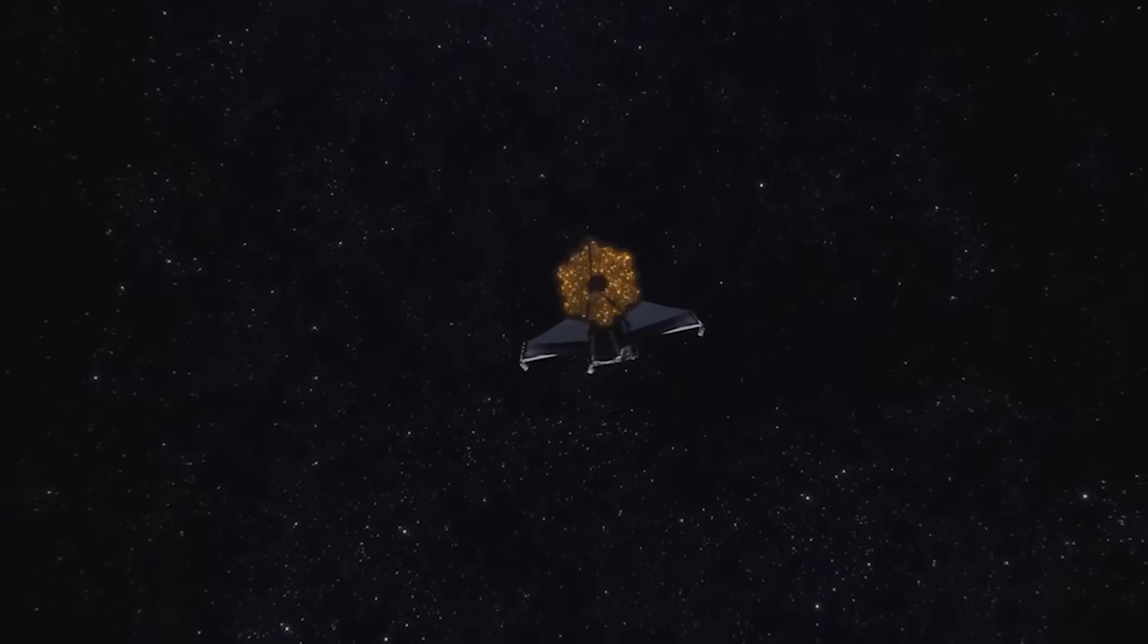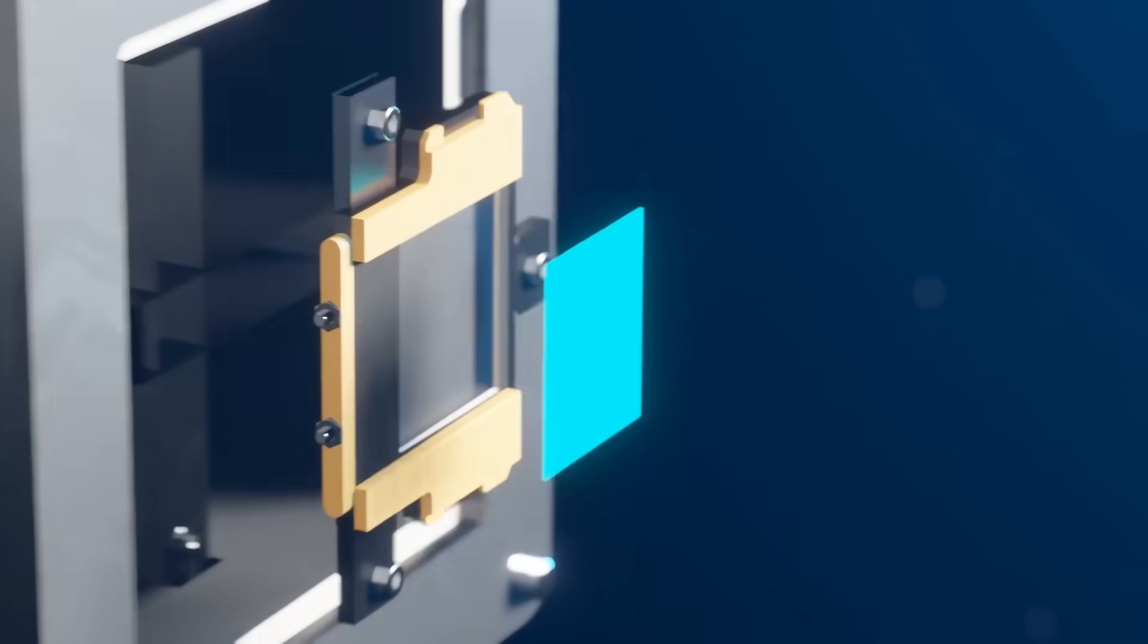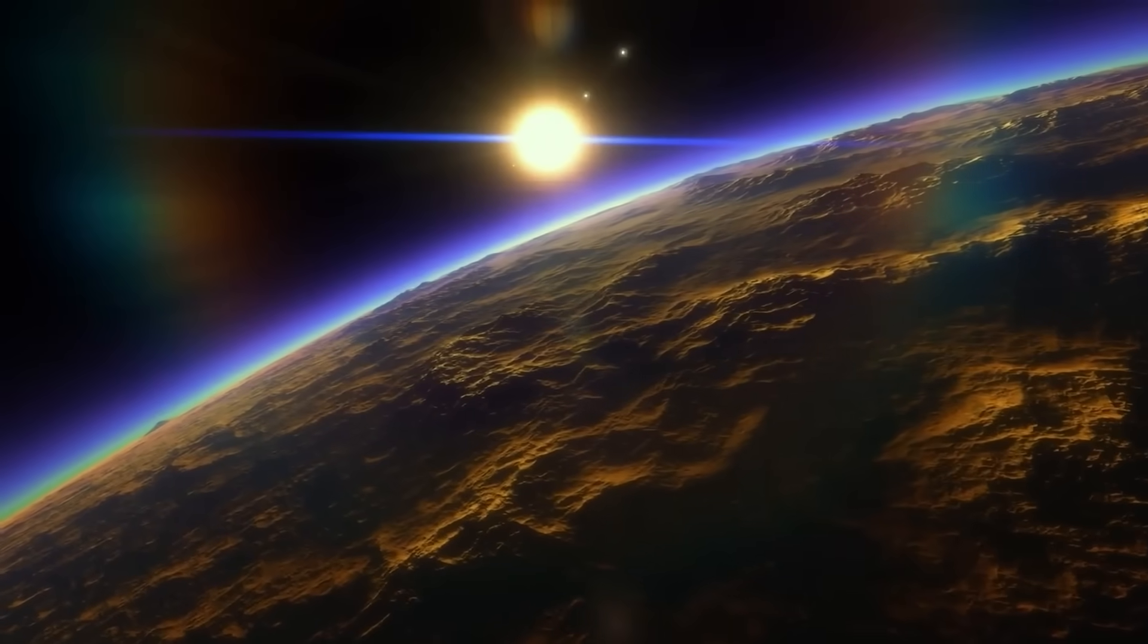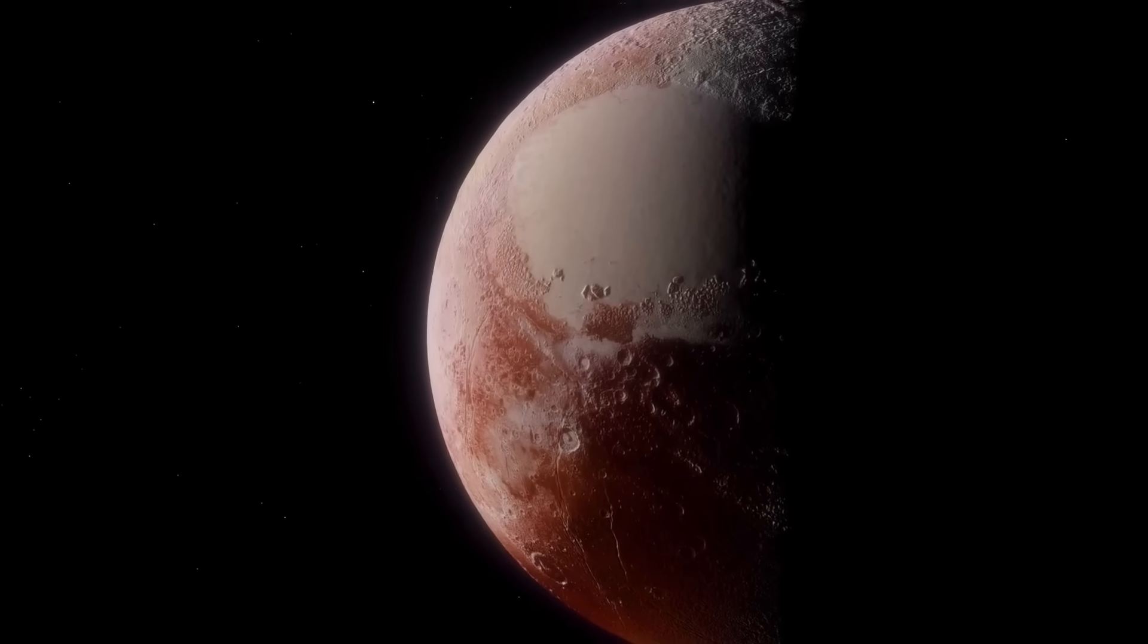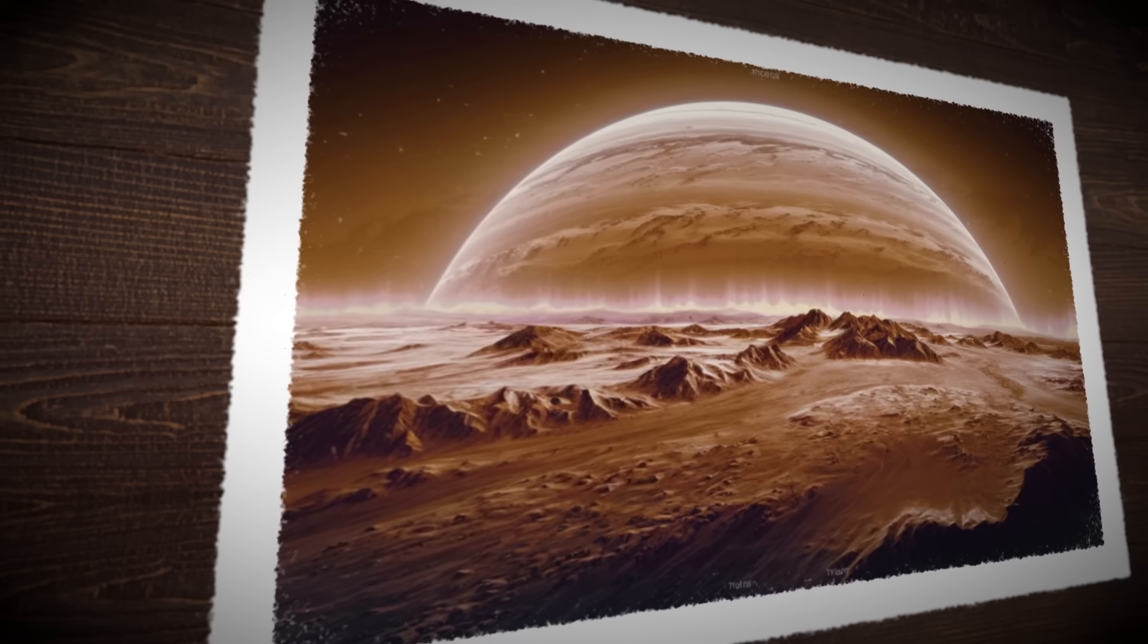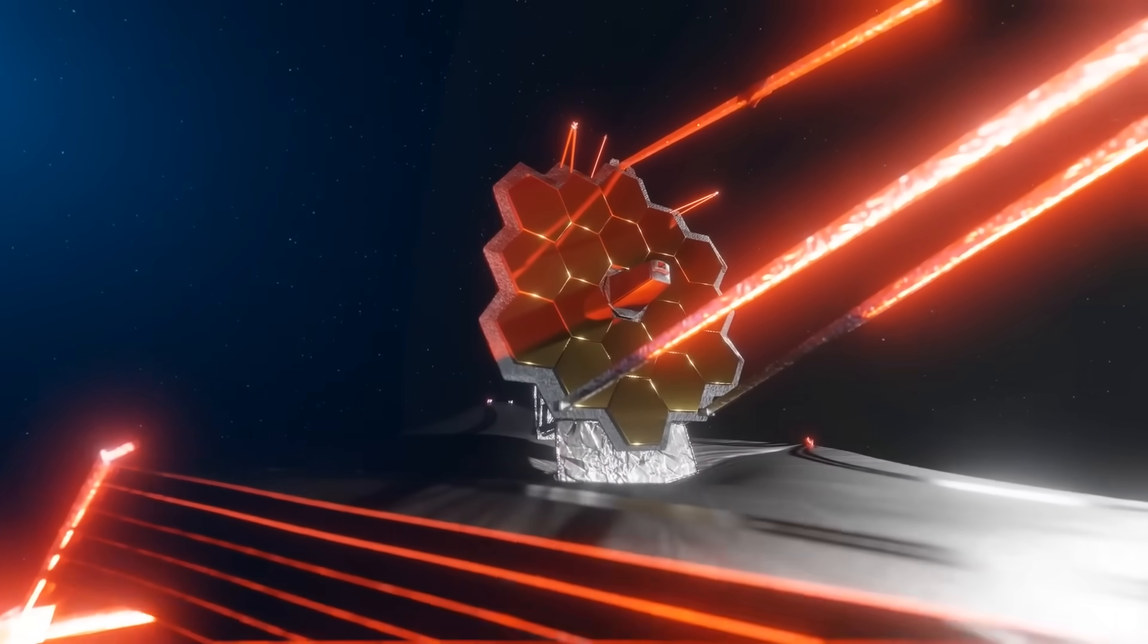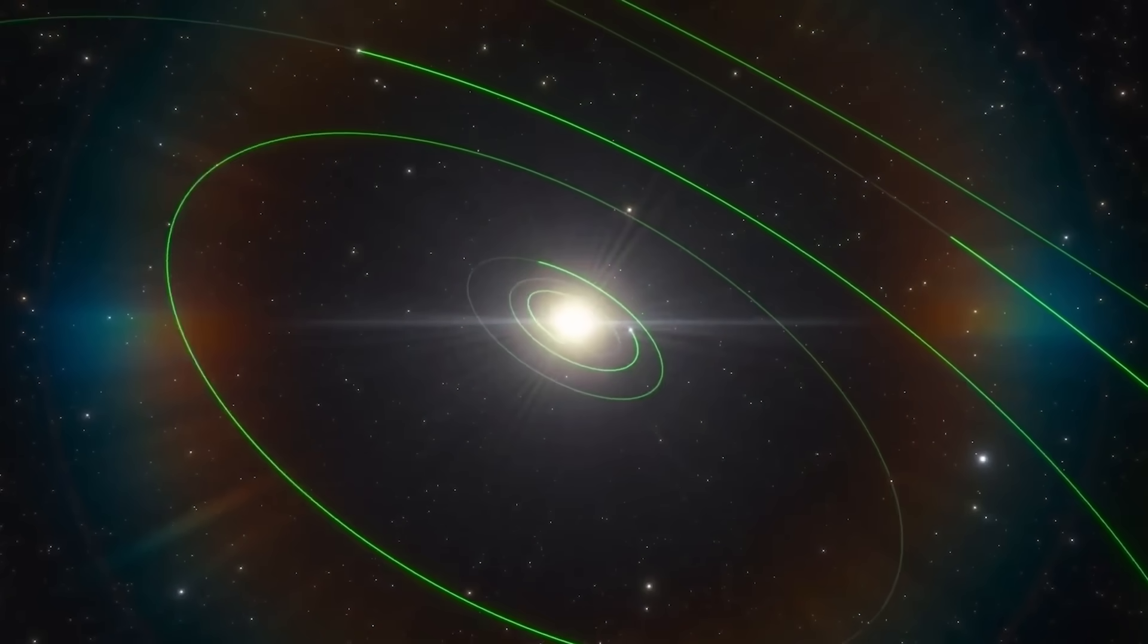The light Webb captured didn't come from the planet reflecting sunlight. It came from the planet's own heat, detected in the infrared. Proof that we're now looking at the world itself - not just a point on a chart, not just a theory, a real place. This isn't just science, it's history in the making.